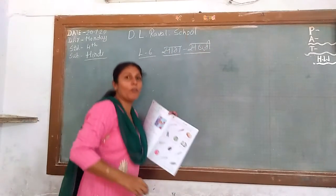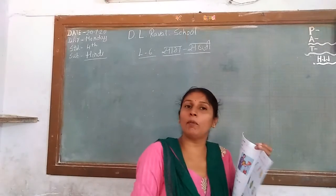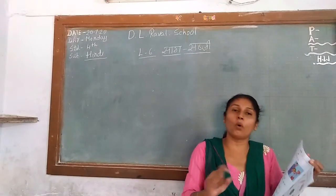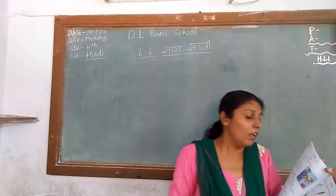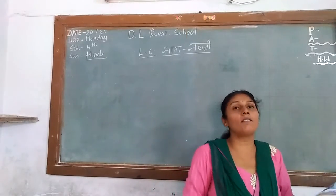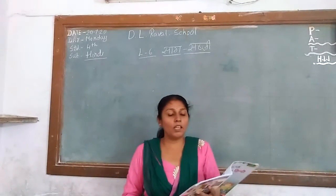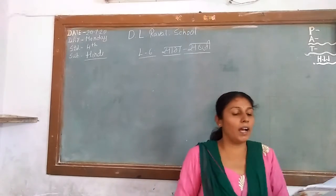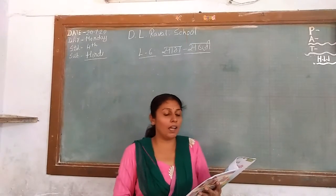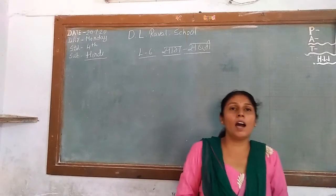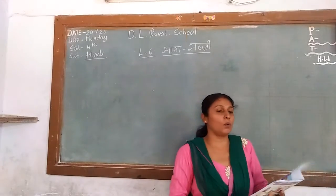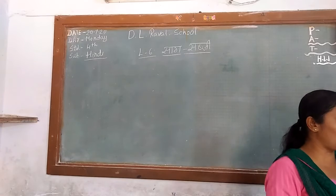In this lesson we will learn vegetable names from Hindi to English. Mooli — that is Radish. Gajar — that is Carrot. Alu — that is Potato.